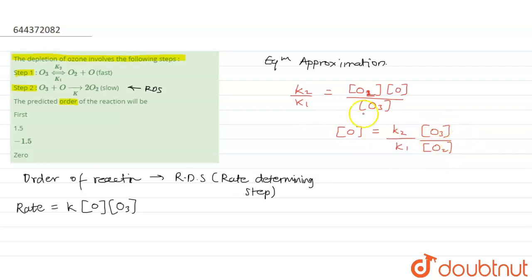This will be the concentration of O, so we can put it here: k times k2k1[O3] divided by [O2] times [O3]. Okay, so this will finally become... so this whole thing we'll take as k dash.